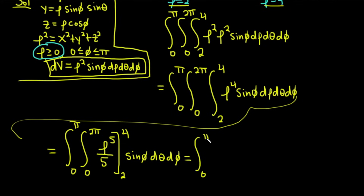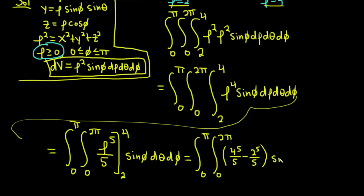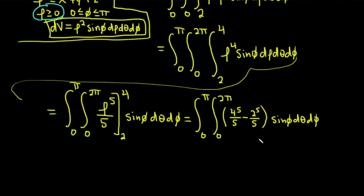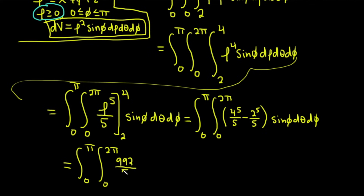Evaluating from zero to pi and zero to two pi: plugging in 4 gives 4 to the fifth over 5, and subtracting 2 to the fifth over 5. Working that out — 4 to the fifth over 5 minus 2 to the fifth over 5 — you end up with 992. So this equals the integral from zero to pi, the integral from zero to two pi, of 992 over 5 times sine phi, d theta, d phi.